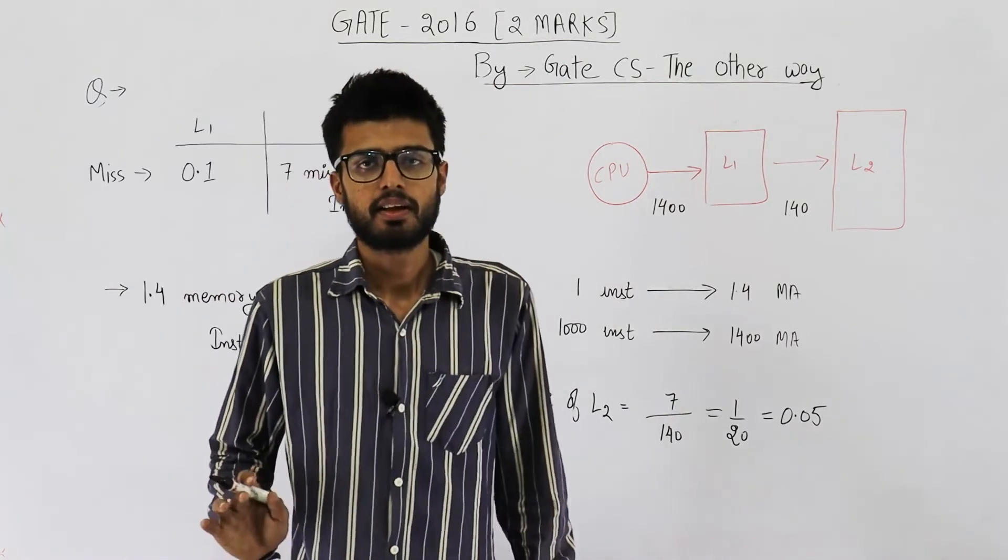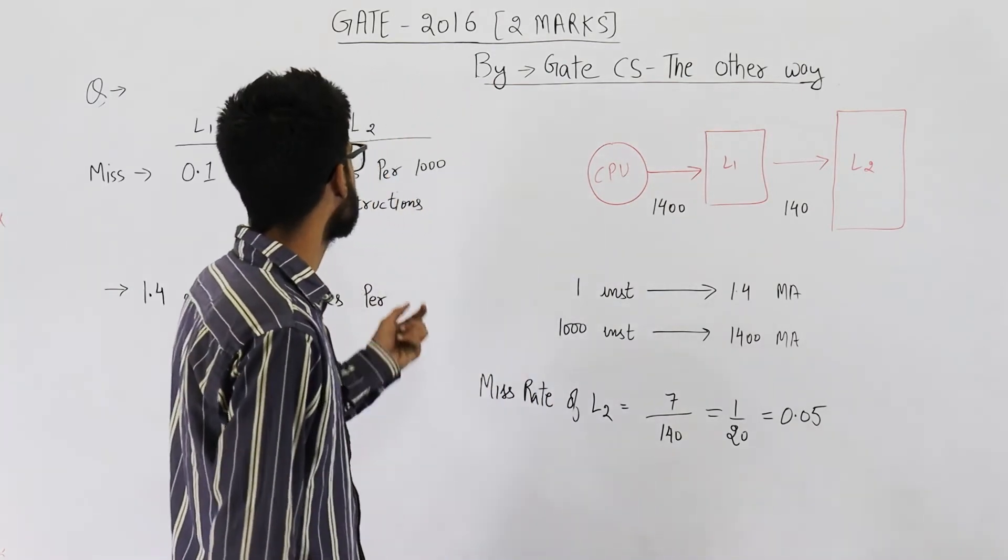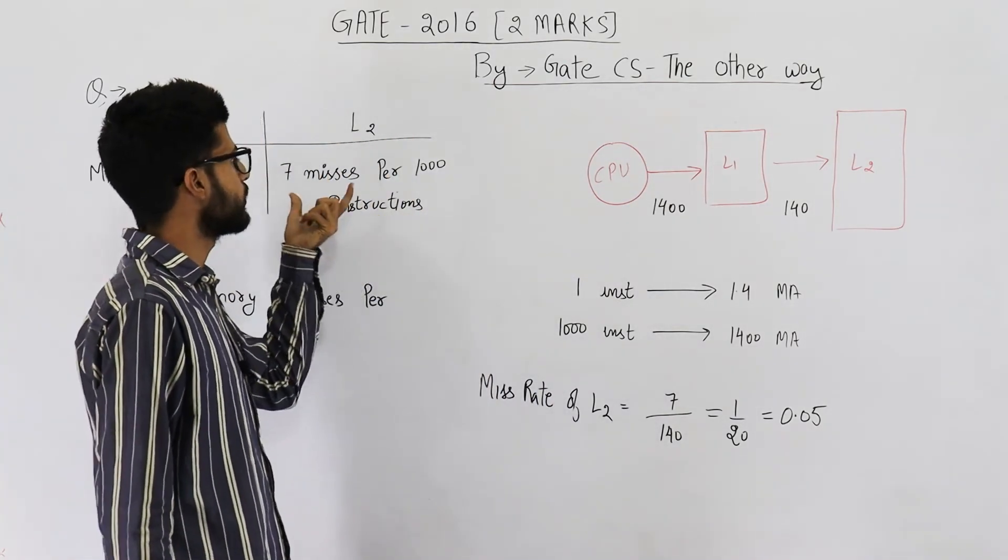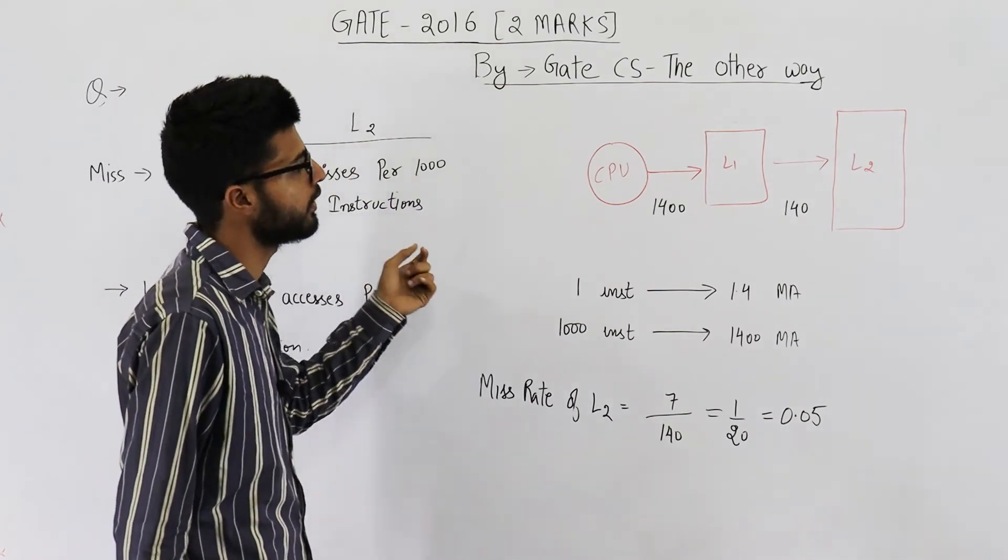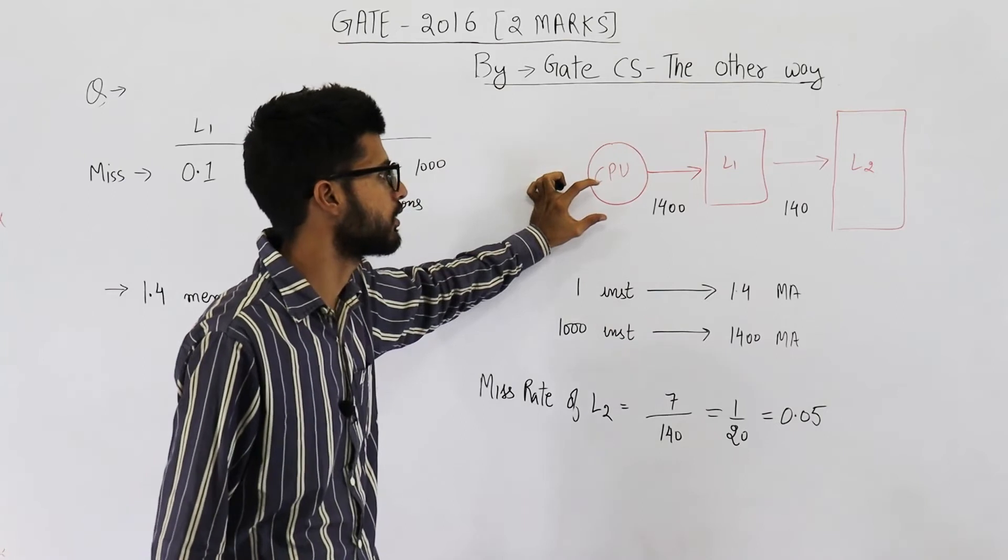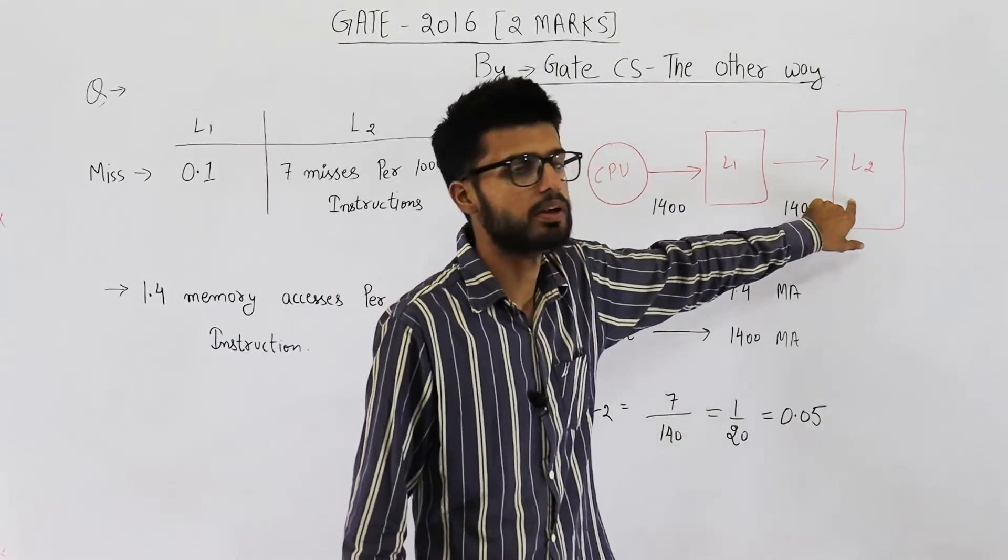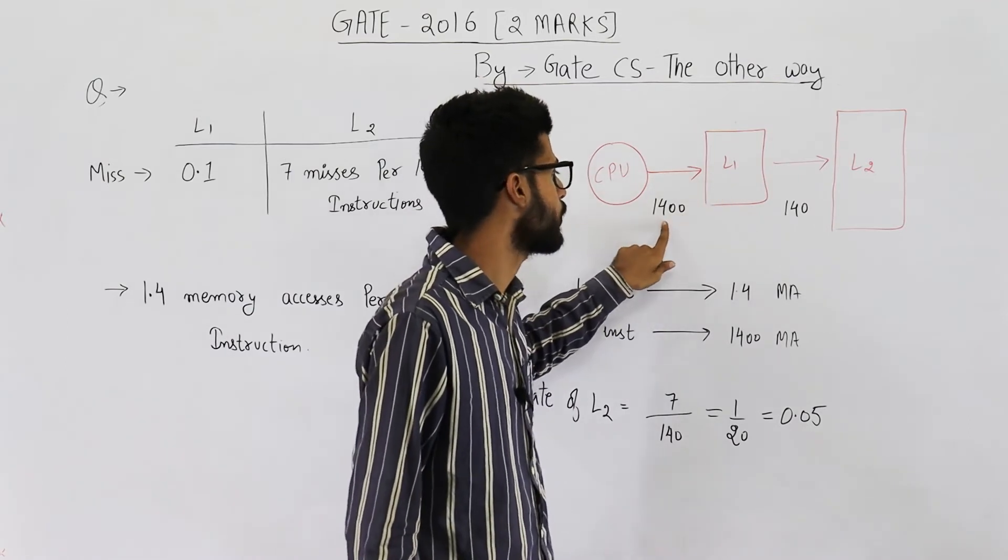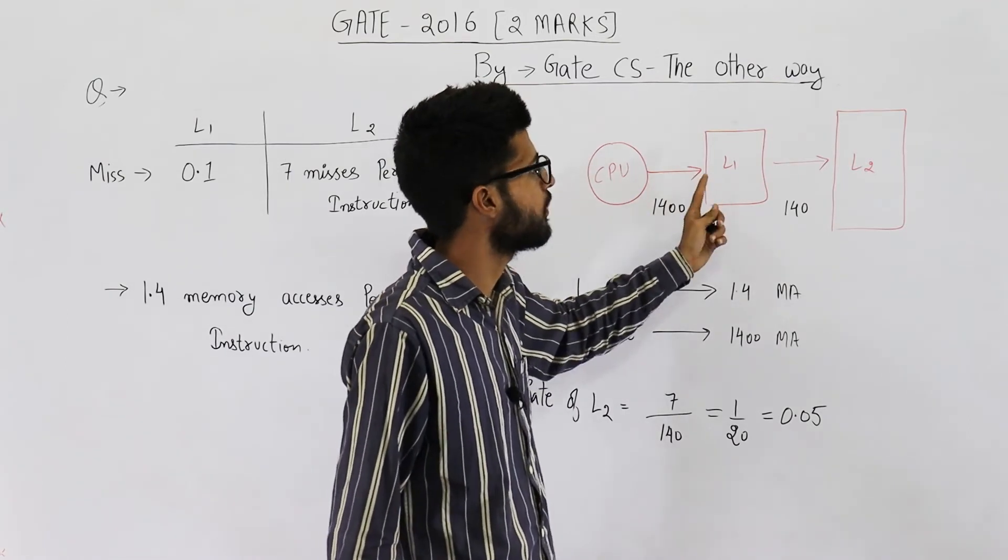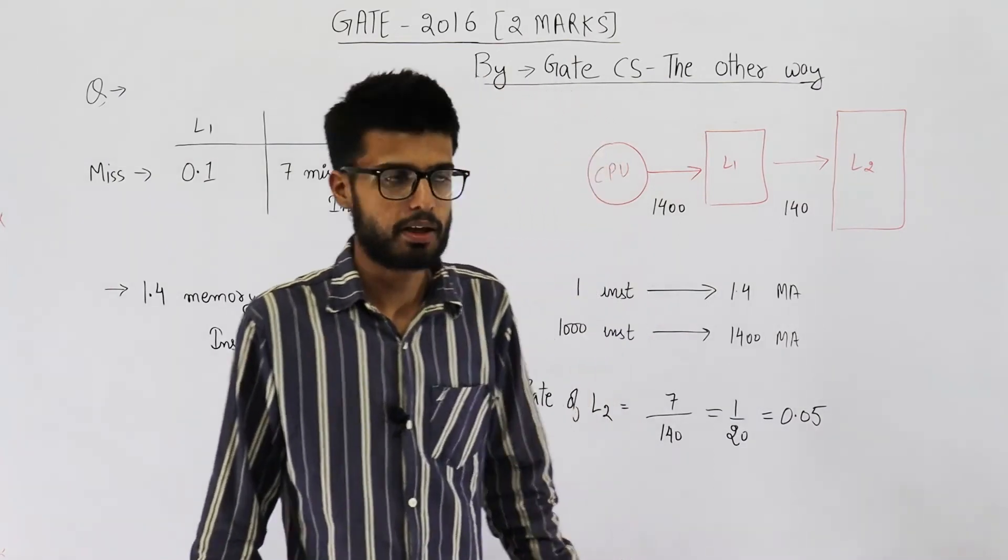The only thing that you need to be careful is these 7 misses are per 1000 instructions. So calculate for 1000 instructions how many times L2 will be accessed. For 1000 instructions CPU asks for 1400 words from L1. L1 asks for 140 words from L2.